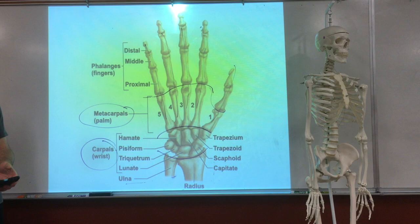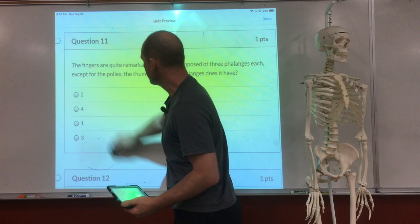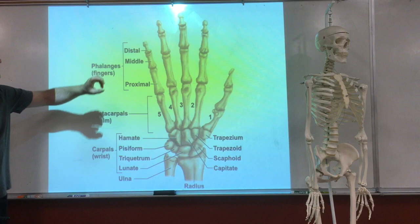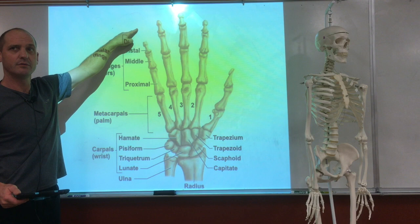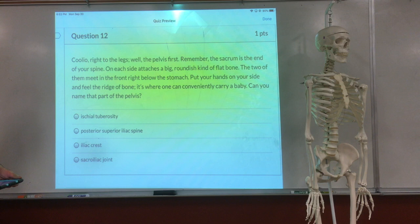So that was five metacarpals in the picture you didn't have — sorry about that. The fingers are quite remarkable — they're composed of three. How many phalanges does the thumb have? Two.